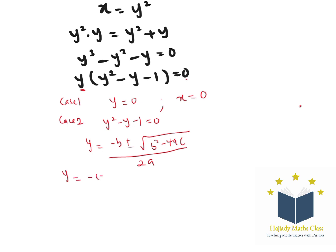...minus negative 1 plus or minus root of b squared, which is 1, minus 4ac, which is 4 times 1 times c which is negative 1, all over 2a, which is 2 times 1.